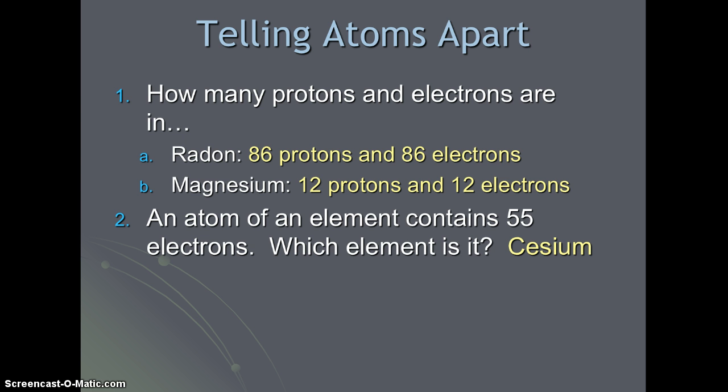An atom of an element contains 55 electrons. Which element is it? Because protons and electrons are equal, this atom also has 55 protons, and number 55 on the periodic table is cesium.